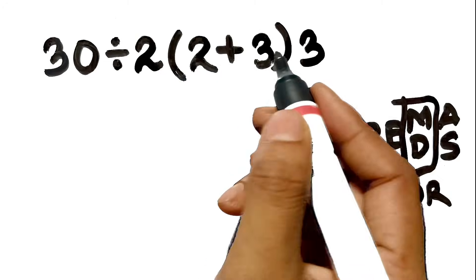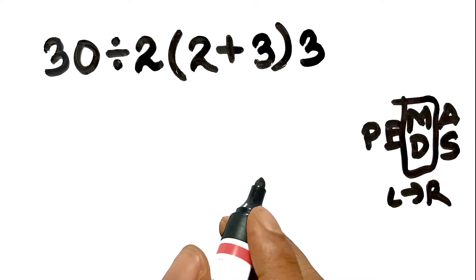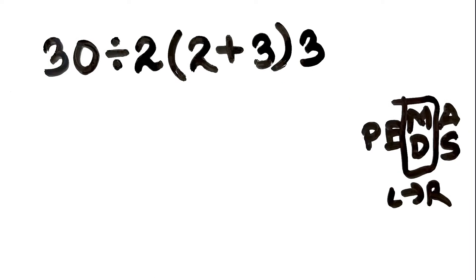A division, a multiplication, and another multiplication. We must strictly process these from left to right. If we do the multiplication first, just because the numbers look connected, it is wrong.